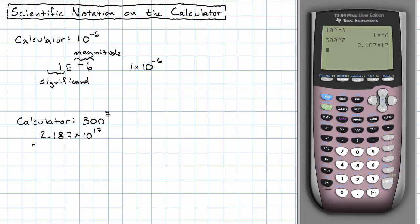We take our 2, 1, 8, 7, and we move the decimal point. 1, 2, 3, 4, 5, 6, 7, 8, 9, 10, 11, 12, 13, 14, 15, 16, 17 places.